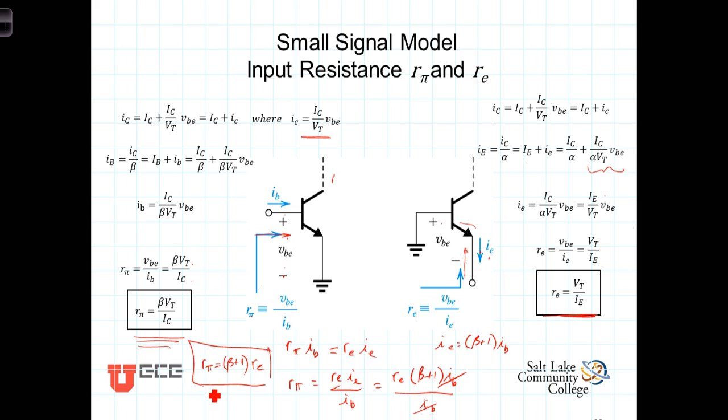We'll find that this is a useful relationship when we come to creating the hybrid pi, or the small signal model, for these BJTs.